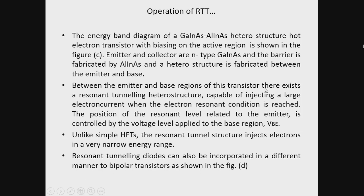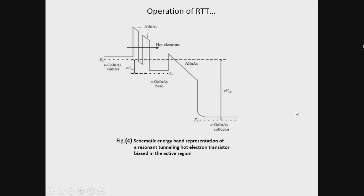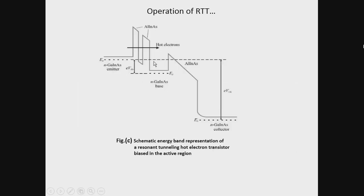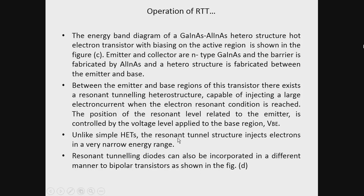Between the emitter and base region of this transistor there exists a resonant tunneling heterostructure capable of injecting large electron current when the electron resonant condition is reached. When the resonant condition is reached, large electron currents are injected from the emitter into the base. Unlike a simple hot electron transistor, the resonant tunneling structure injects electrons in a very narrow energy range ΔEVEBE, which is much smaller compared to a conventional device.